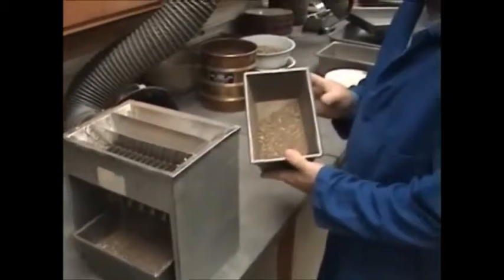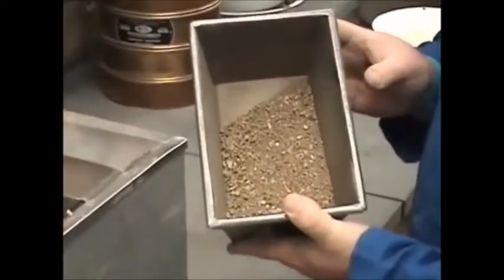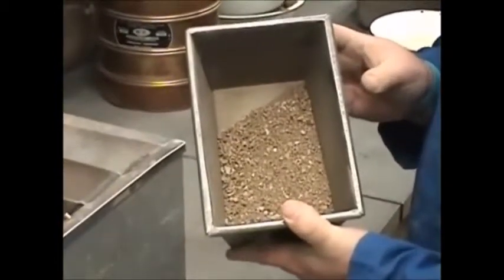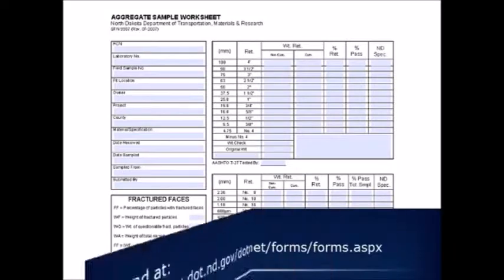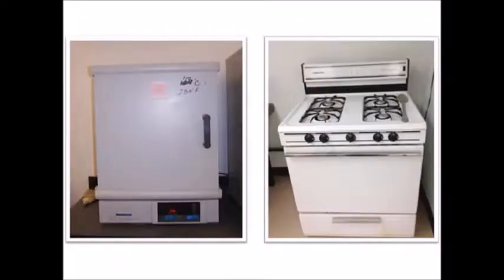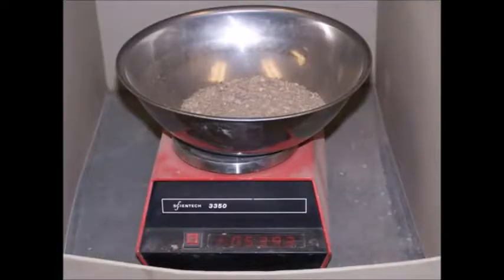This is approximately 500 grams of minus 4 material. The first step of the procedure is to obtain a copy of State Form 9987 to record the weights. The second step is to dry the sample to constant weight using a suitable drying method before washing. Weigh and record the weight of the material to the nearest tenth of a gram.